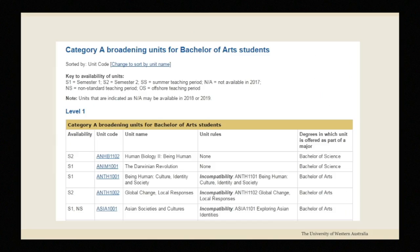For instance if you're enrolling in a Bachelor of Arts course, browse through the list of category A and category B broadening units and check the unit rules to see whether you can enrol.